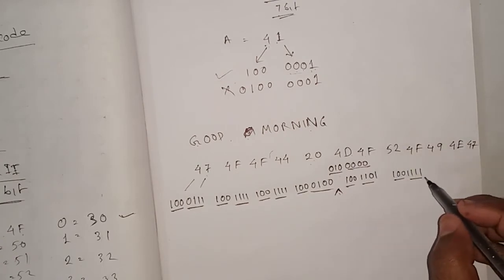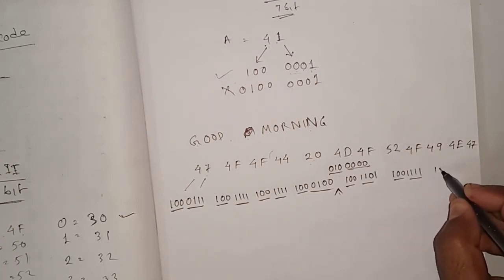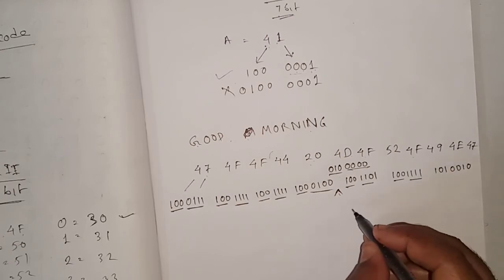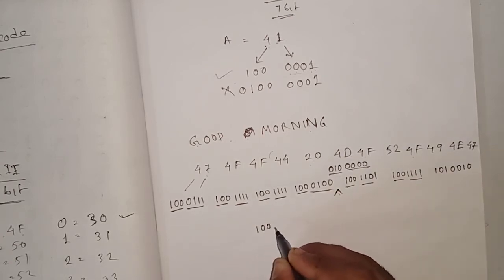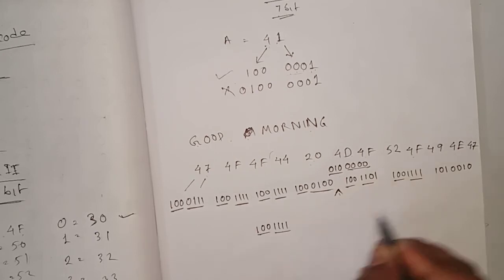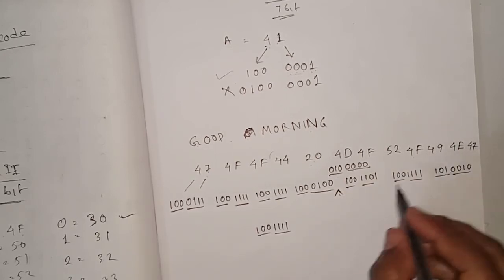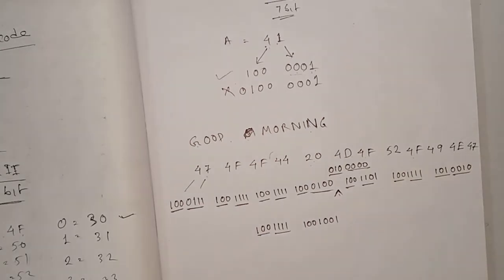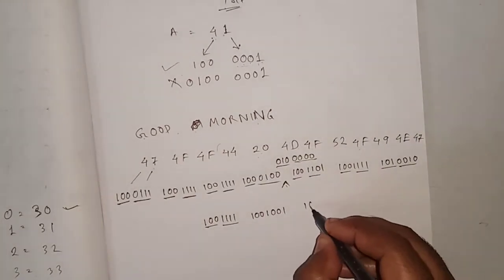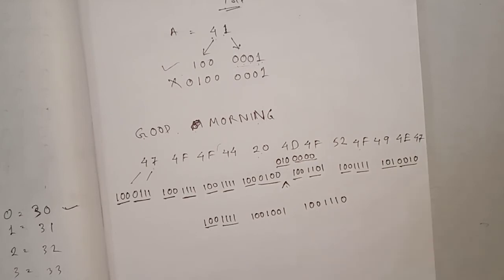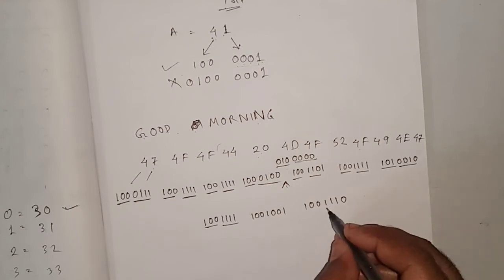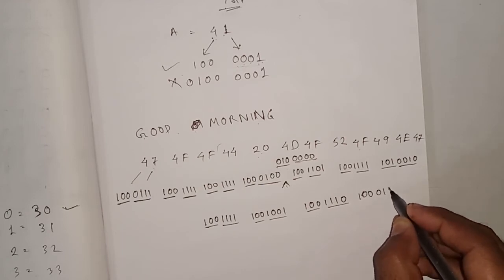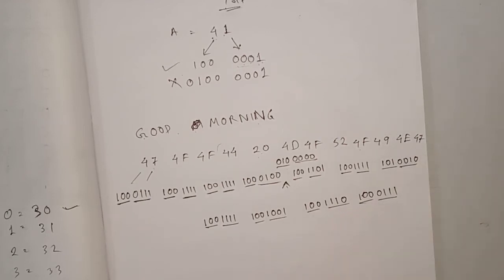M (4D): 4 = 100, D = 1101 → 1001101. R (52): 5 = 101, 2 = 0010 → 1010010. O (4F): 4 = 100, F = 1111 → 1001111. I (49): 4 = 100, 9 = 1001 → 1001001. N (4E): 4 = 100, E = 1110 → 1001110. G (47): 4 = 100, 7 = 0111 → 1000111. This is my answer for encoding 'Good Morning'.